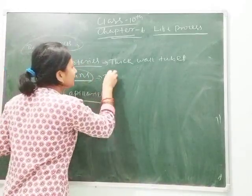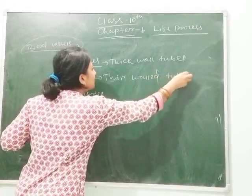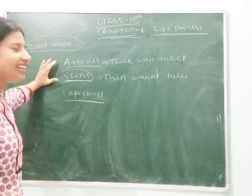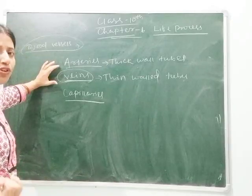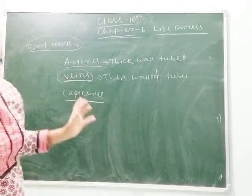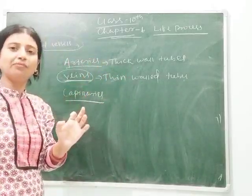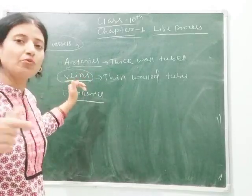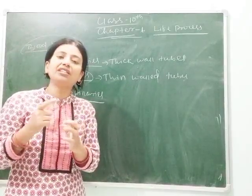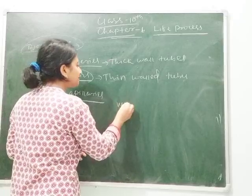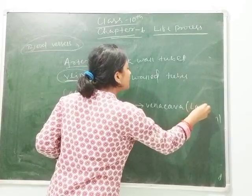Veins are thin wide tubes. The lumen of a vein is thin as it transports impure or deoxygenated blood. Veins bring blood from the body parts back to the heart. So here is the difference: arteries carry blood away from the heart, whereas veins carry blood towards the heart. Some veins are connected to form the vena cava, which is called the large vein.